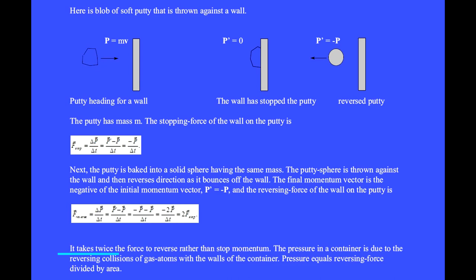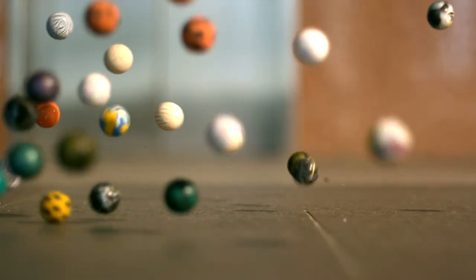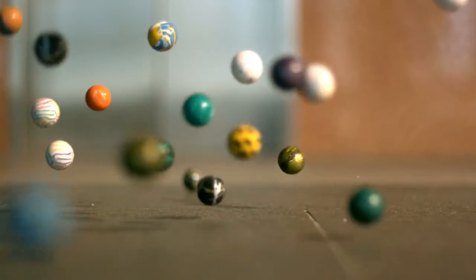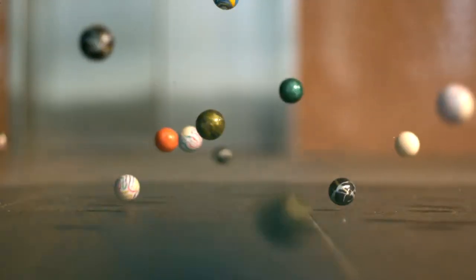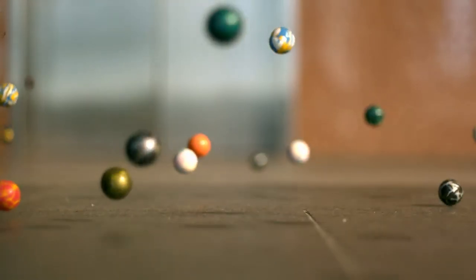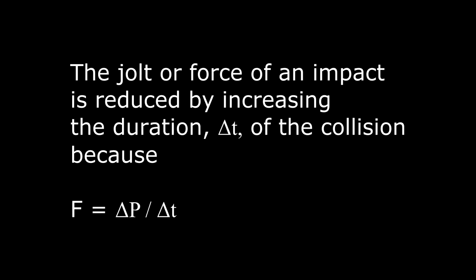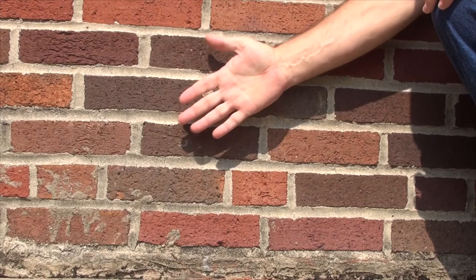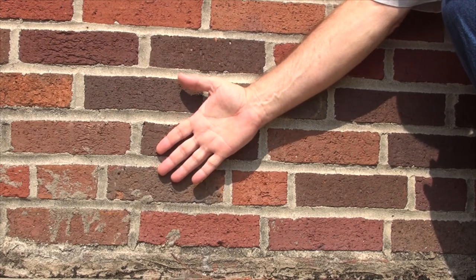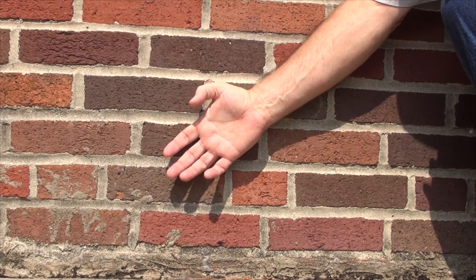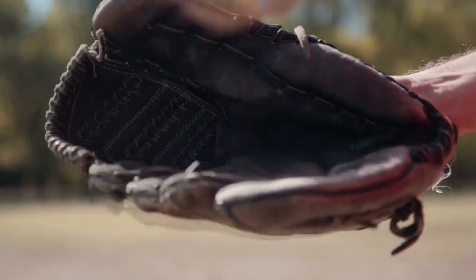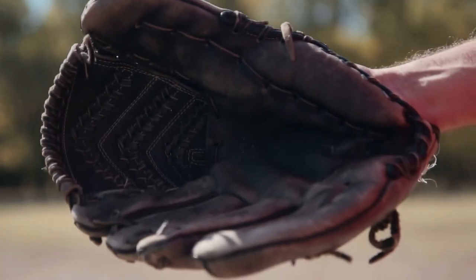It takes twice the force to reverse rather than stop momentum. The pressure in a container is due to the reversing collisions of gas atoms within the walls of the container. Pressure equals reversing force divided by area. The jolt or force of an impact is reduced by increasing the duration delta-t of the collision, because force F equals delta-p divided by delta-t. We use padded gloves to increase the time through which the collision occurs.